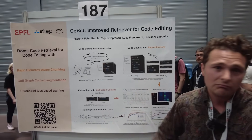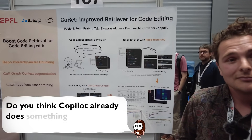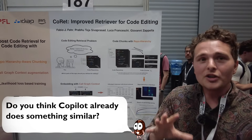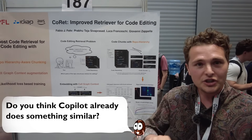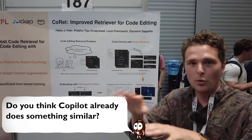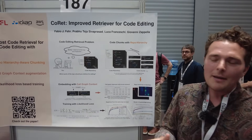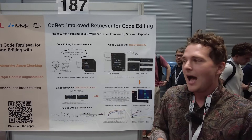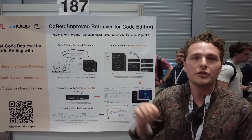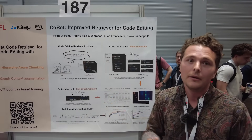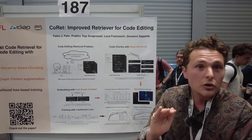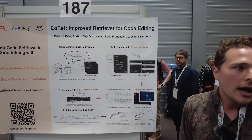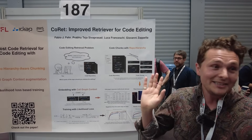Do you think Copilot already does something similar? Copilot works really well for code completion — you start coding and it fixes it up or continues. But if you ask it something in natural language, I'm not certain it's going to be able to find the correct pieces in a giant repo. I think it's very good at doing very local stuff, whereas this is kind of a more global view of code. Maybe they do it, maybe they don't.